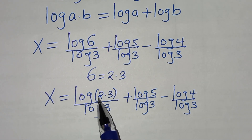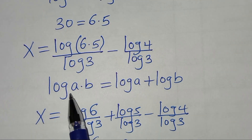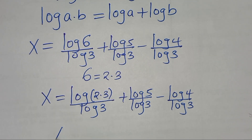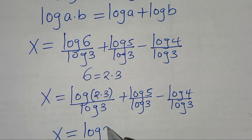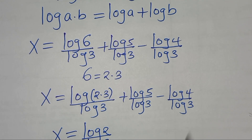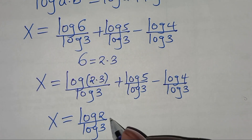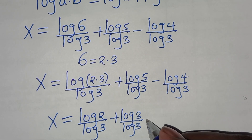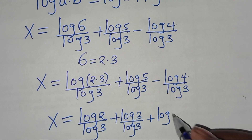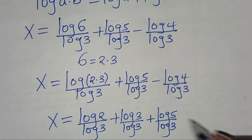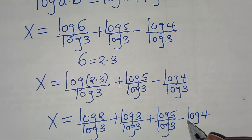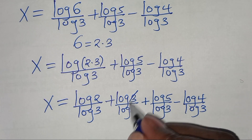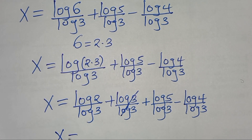Now again log(2 times 3) is in the form of log(A times B), which we can express as log A plus log B. So x is the same thing as log 2 over log 3, then plus log 3 over log 3, then plus log 5 over log 3, subtract log 4 over log 3. Let's simplify: log 3 over log 3 simplifies to 1.